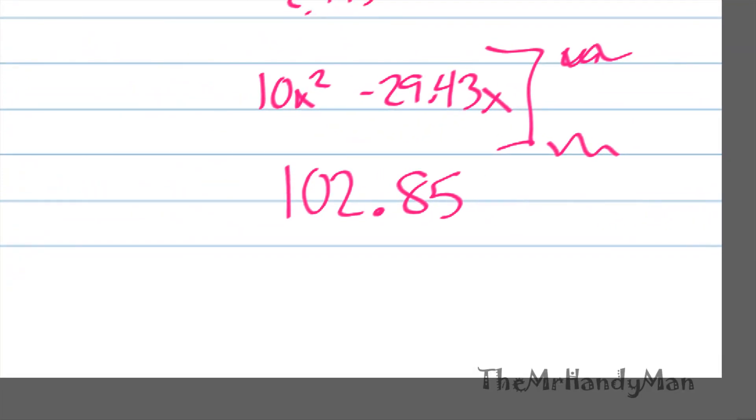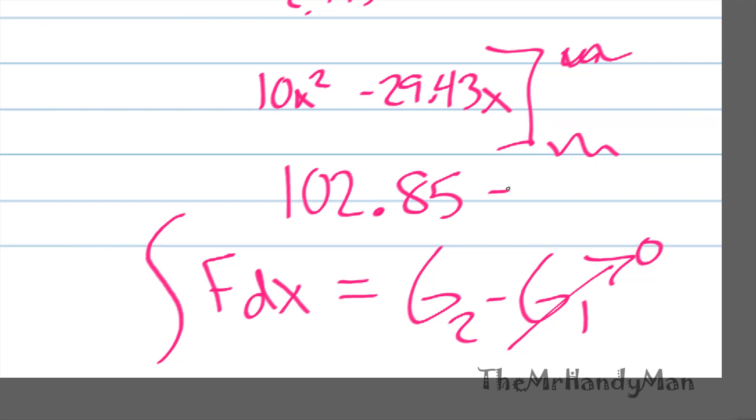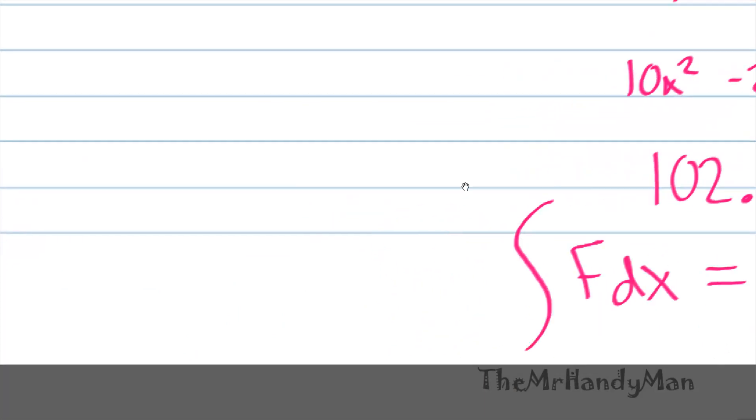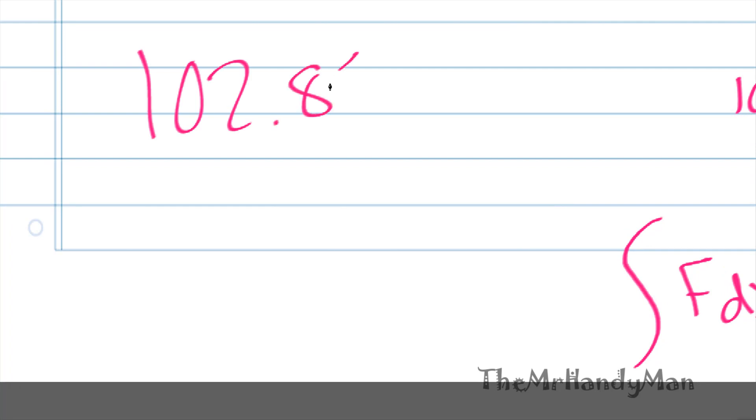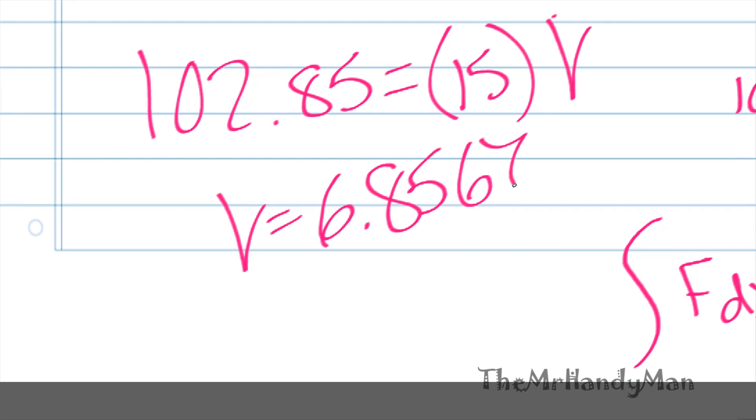One thing that we should remember from momentum is that impulse, or the integral of Fdt or whatever the case may be, is the same thing as G2 minus G1. G1 was stationary, G2 is not. We can actually relate G2 as MV and we could calculate the velocity. Let's do that: 102.85 equals 15 times V. If you calculate that out, V is equal to 6.8567 meters per second.